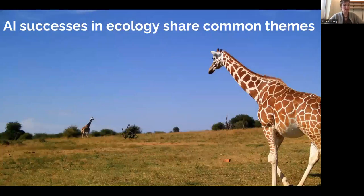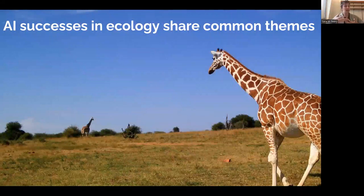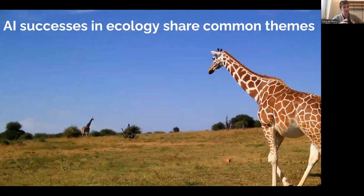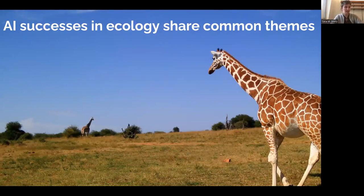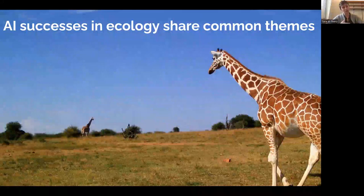There have been some really exciting successes of AI in ecology in recent years — not just papers with proof-of-concept benchmarks claiming some accuracy number, but truly cases where AI is a fundamental component of a system that is actively used and useful for many ecologists. These are real AI successes where AI has made it into translation and into the hands of users and stakeholders.